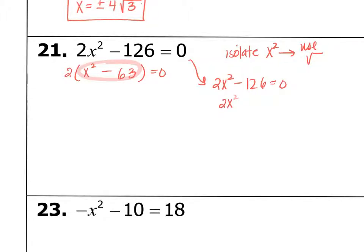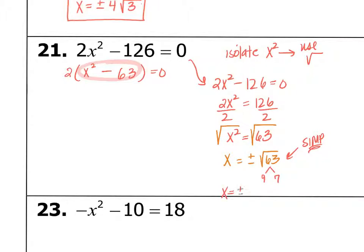So add 126 to both sides. Divide by 2. There's that 63 again. So x² equals 63. Take the square root on both sides. So we have x equals plus or minus the square root of 63. This can be simplified because 63 is divisible by the perfect 9. 9 and 7. So x equals plus or minus 3 square root of 7.